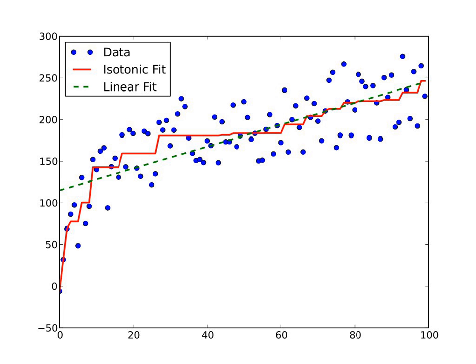The isotonic estimator g minimizes the weighted least squares-like condition: min g element of A, sum i equals 1 to n of w_i times (g(x_i) minus f(x_i)) squared, where A is the set of all piecewise linear, non-decreasing, continuous functions and f is a known function.